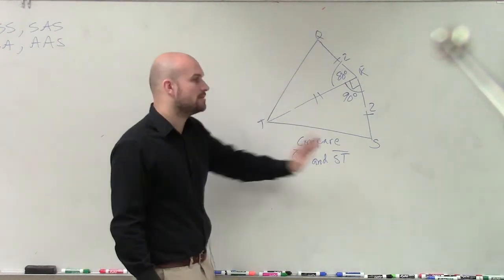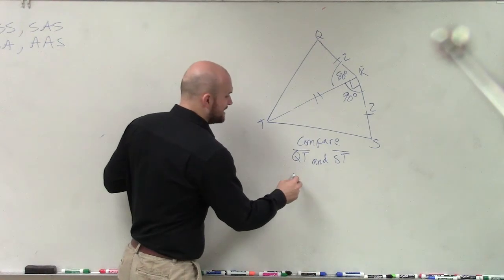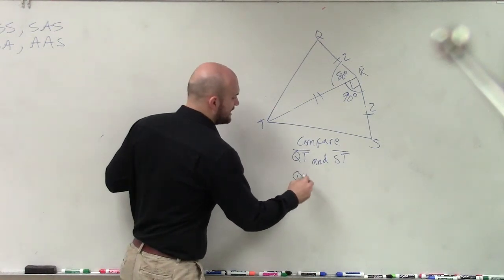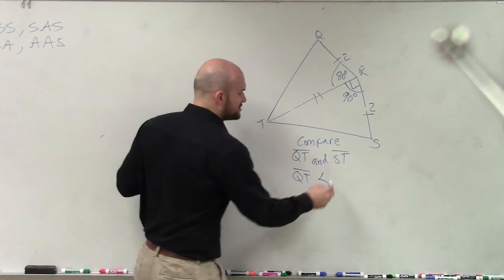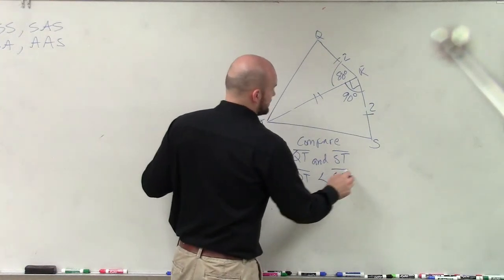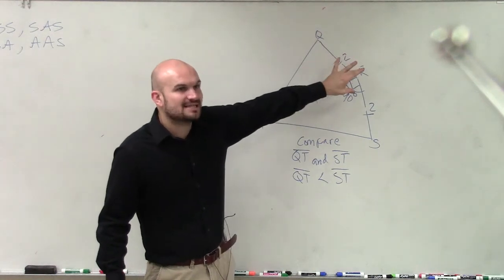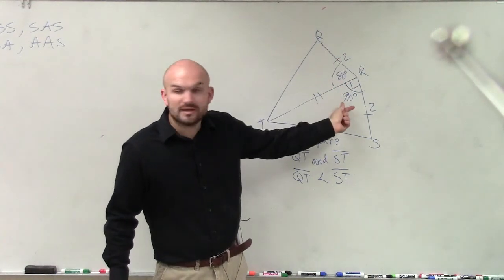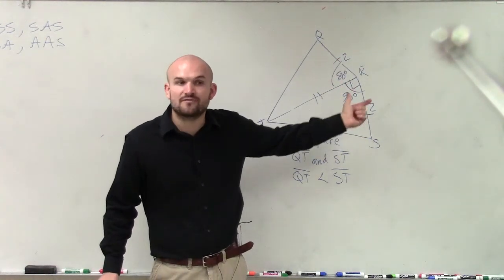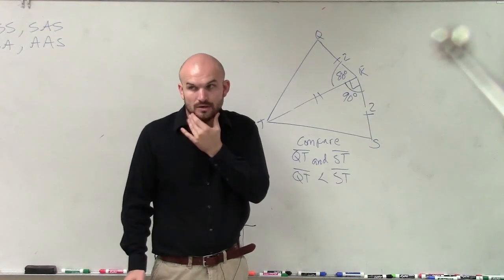So therefore, comparing them, we can say that QT is going to be less than ST in measure because its included angle between the congruent sides is less than the included angle of our other triangle.